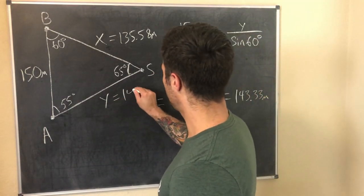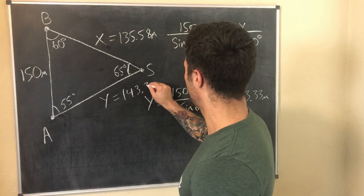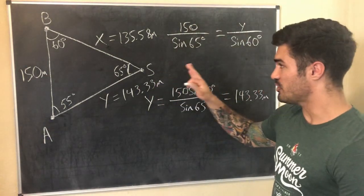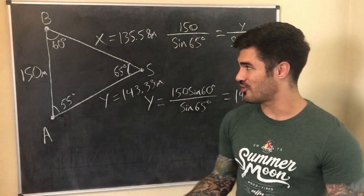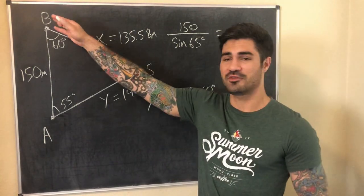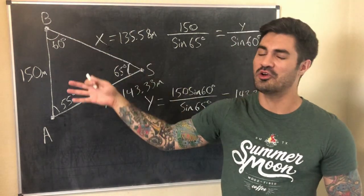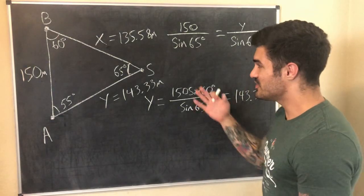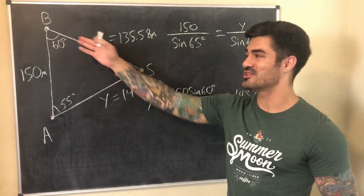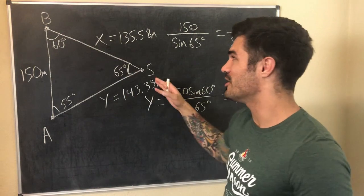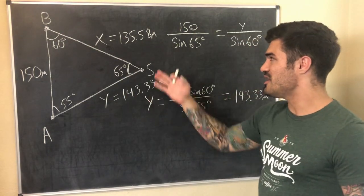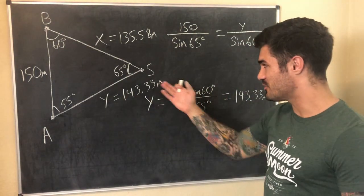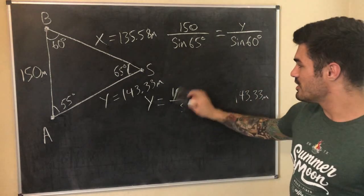Punching that in gives 143.33 miles — that's the distance from the ship to Station Abel. So the ship is closer to Station Baker at 135.58 miles versus 143.33 miles to Station Abel. Station Baker would likely respond to the SOS call since it's the closer station.